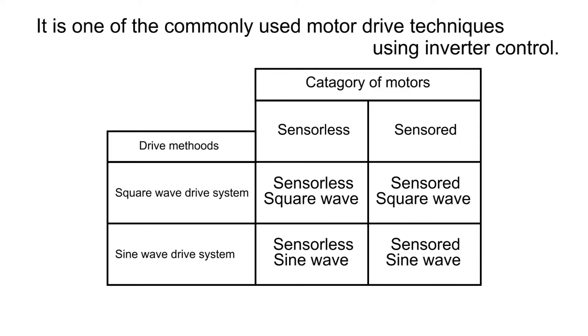Vector control can implement censored sine wave control and sensorless sine wave control easily. This video uses a three-phase motor as an example to describe sensorless vector control.